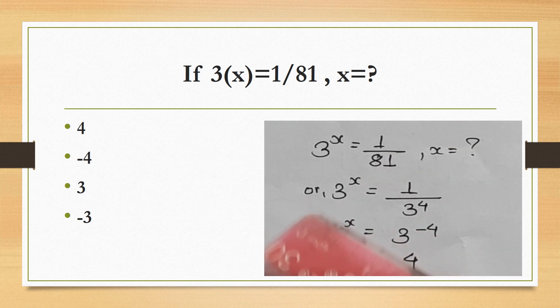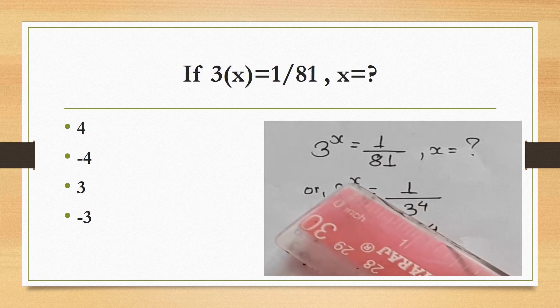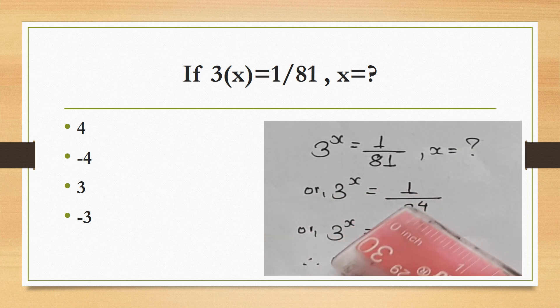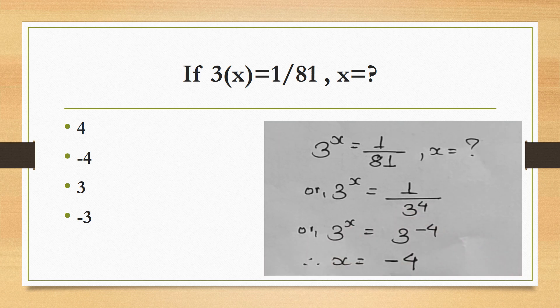If 3^x = 1/81, find x. We can write 1/81 = 1/3^4 = 3^(−4). Since 81 = 3 × 3 × 3 × 3 = 3^4.